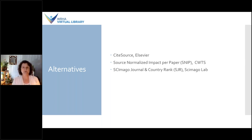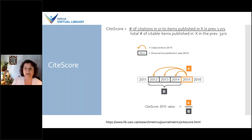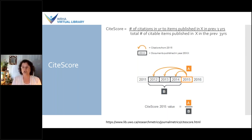Those other metrics being CiteScore from Elsevier, Source Normalized Impact per Paper (SNIP), and SCImago Journal and Country Rank (SJR). CiteScore was created by Elsevier and is fairly new — it came out in December 2016. The metrics are freely available and based on data from Scopus rather than Web of Science. By some accounts, Scopus has double the number of indexed journals compared to Web of Science. They boast transparent calculations, use a three-year calculation rather than two years, and focus on peer-reviewed publications such as articles, reviews, conference proceedings, book chapters from serial titles, and data papers.